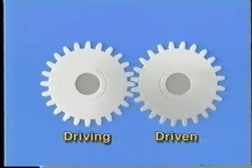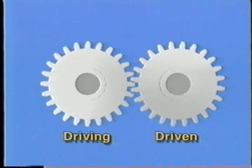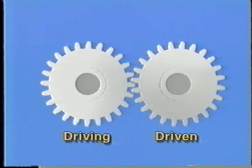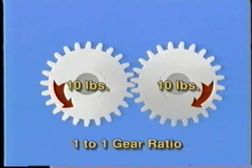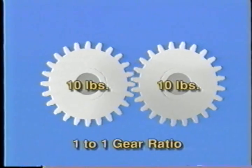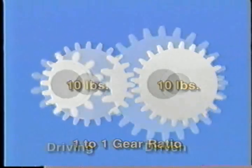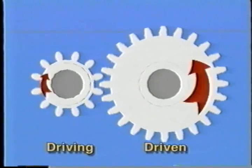Here we see two gears in mesh. They are the same diameter and have the same number of teeth. Since each gear is the same size, they both rotate at the same speed and with the same amount of torque. This is a one-to-one gear ratio. However, if we take a smaller diameter gear, the ratio and torque characteristics will change.